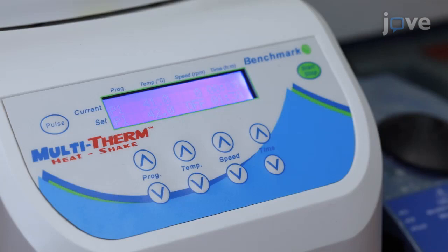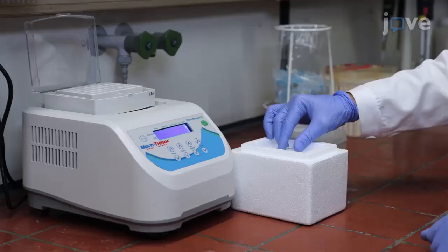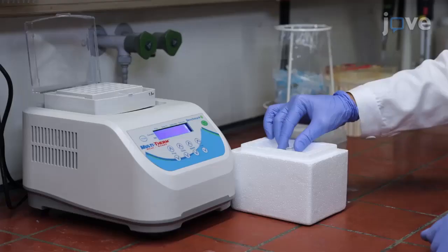Heat a thermoshaker to 42 degrees Celsius. Place the tube containing the bacteria in the apparatus and heat for 90 seconds. Then, place the tube on ice immediately.